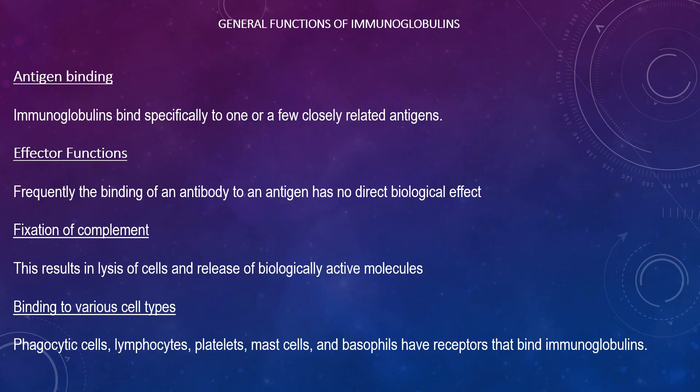We look at the communal functions of immunoglobulins such as antigen binding and effector functions. With regards to antigen binding, immunoglobulins bind specifically to one or a few closely related antigens. Each immunoglobulin binds to a specific antigenic determinant. Antigen binding by antibodies is the primary function and can result in protection of the host. The valency of antibody refers to the number of antigenic determinants that an individual antibody molecule can combine with — the valency of all antibodies is at least two and in some instances more.